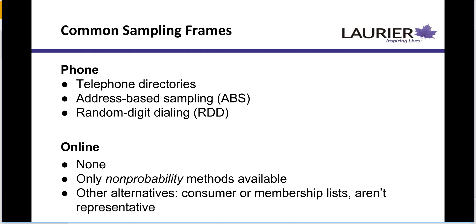For phone surveys, there are a few different common sample frames. A sample frame might be a telephone directory — in a given city or region, you could have access to a list of phone numbers to use for phoning households. Address-based sampling works on the same idea: you've got a directory that's address-based and you use that to pull your sample. Then there's random digit dialing, which is probably one of the most common sampling frames for phone surveys — it's essentially auto-dialing, so you can do a better job of catching folks with cell phones.